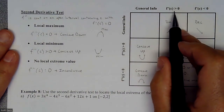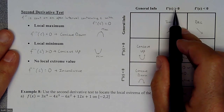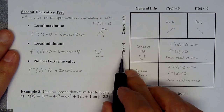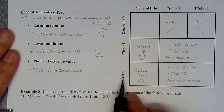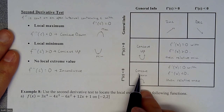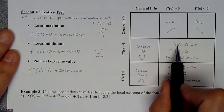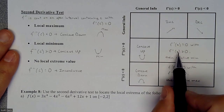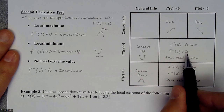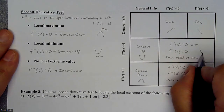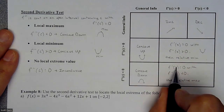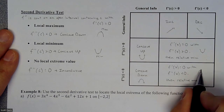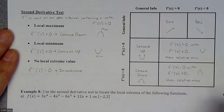A little summary: if the first derivative is greater than zero, we have increasing sections; if it's less than zero, we have decreasing sections. If the second derivative is greater than zero, we have concave up; if the second derivative is less than zero, we have concave down. And then putting the pieces together: if we have a critical number where slope is zero and the second derivative is positive — concave up — we have a relative minimum. If the second derivative at the critical value is negative — concave down — we have a relative maximum.